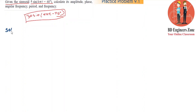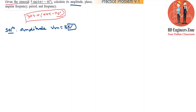Let's look at the solution. The amplitude is 30. The phase angle phi equals minus 60 degrees. The angular frequency is omega.